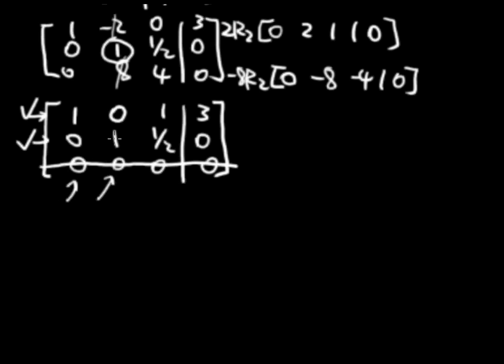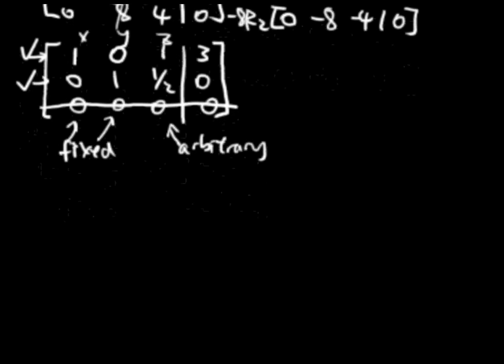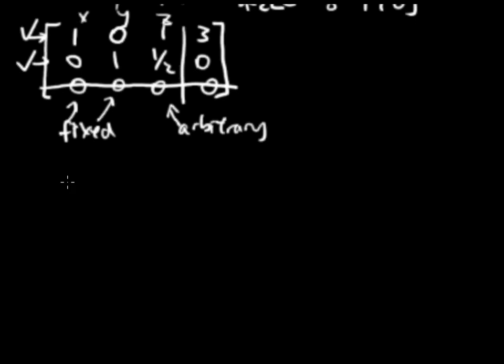These two, the x and y variable, have a leading one. So these are going to be fixed. And this one does not. This is z. So z is going to be arbitrary. So we have... First, I like to start with arbitrary. So z equals z.